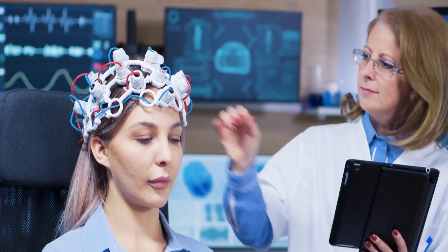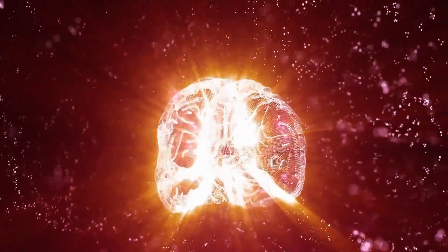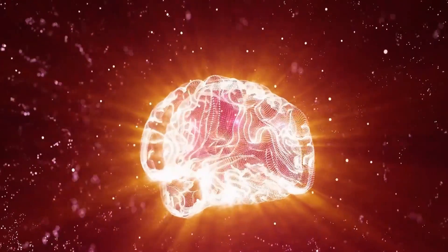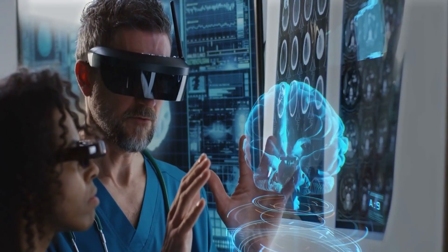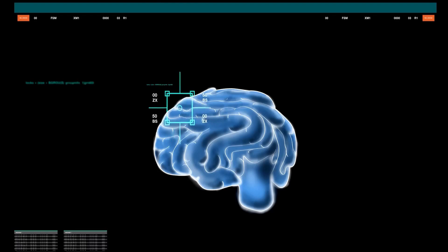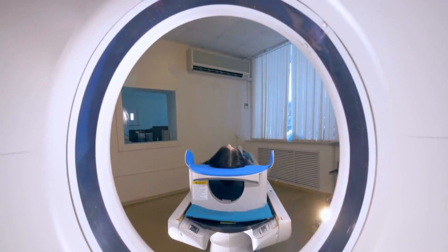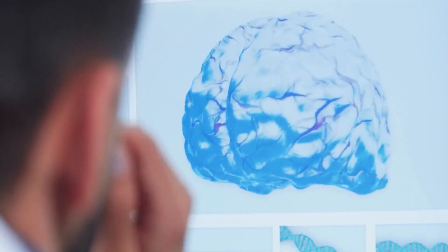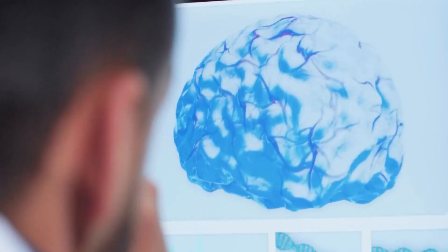Secondly, Neuralink's approach to the implantation procedure stands out. While the Utah Array requires the steady hands and expertise of a neurosurgeon, Neuralink utilizes a fully autonomous robot for the task. Modern robots offer superhuman precision, potentially making the procedure more accessible and safer by eliminating human error.